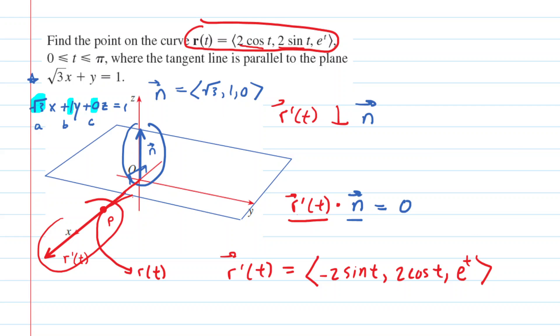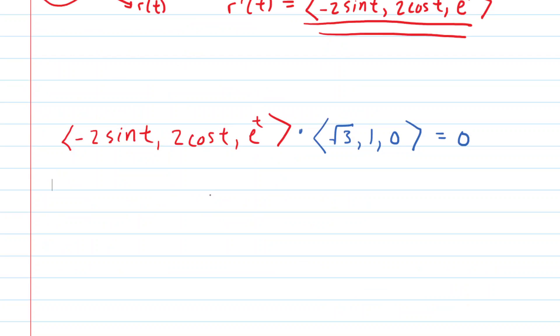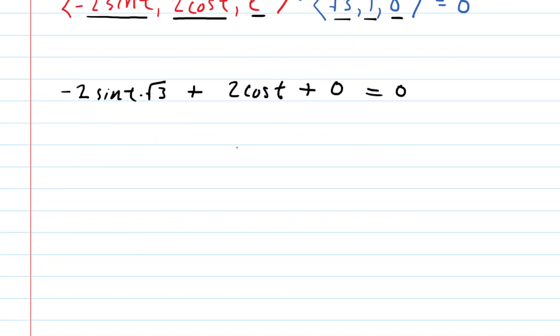Now we take the tangent vector function r'(t) and set up the dot product with the normal vector. To do a dot product, we multiply the components together: (-2sin(t))(√3) + (2cos(t))(1) + (e^t)(0). This gives us -2√3sin(t) + 2cos(t) = 0. Now we can solve this equation for t.